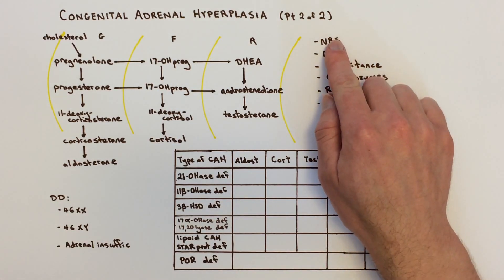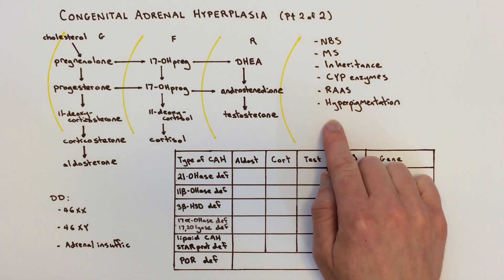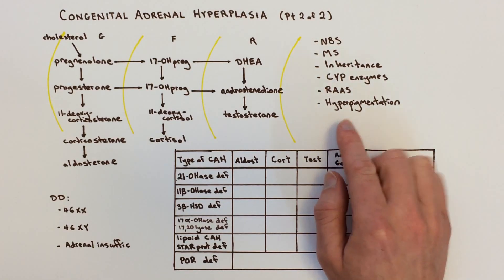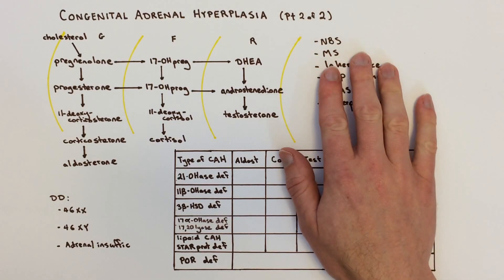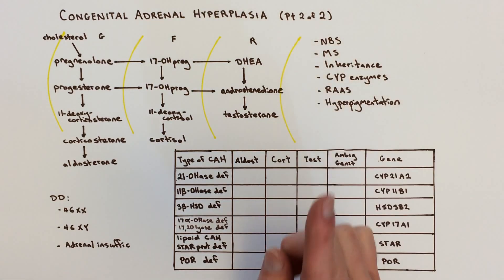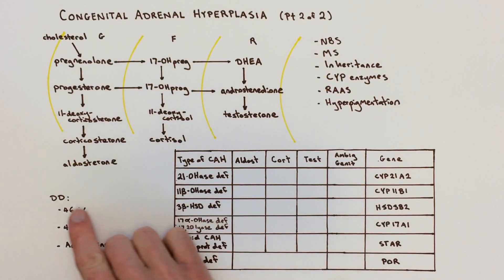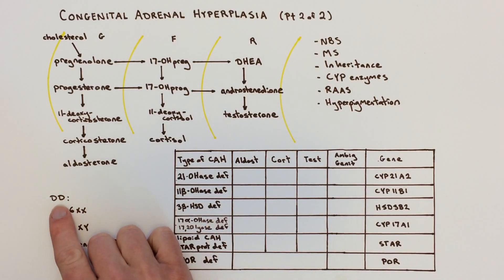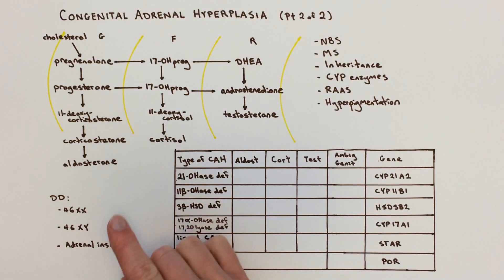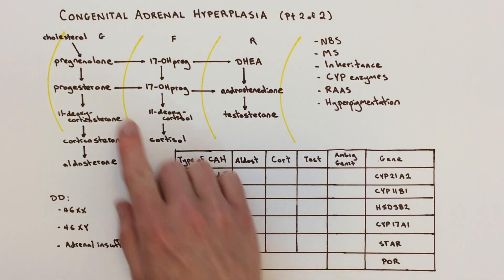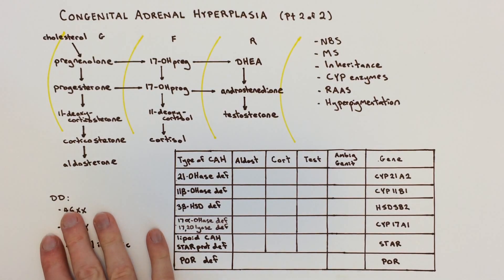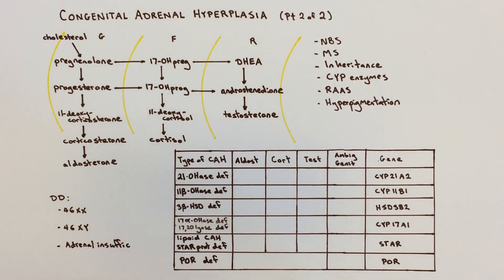We're going to go over a couple additional concepts and definitions that got left out of the first lecture. Also left out of the first lecture is a differential diagnosis of CAH, so we're going to go through that too. So let's get started.